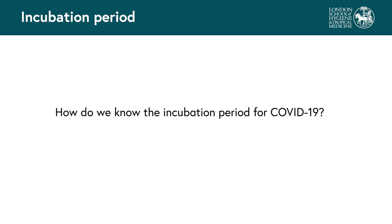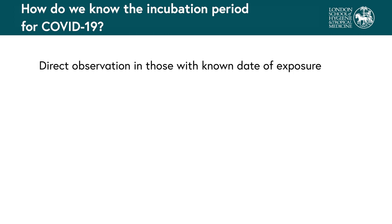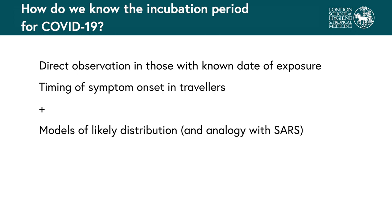Because COVID-19 is new, we didn't initially know the incubation period. It was estimated from direct observation of people with COVID-19 with known dates of exposure, and from travellers from Wuhan as we knew the last possible date of exposure, together with models of the likely distribution of incubation periods based on the typical shape, and comparison with what was known for SARS from 2003. This gave a median of six days, with a range of two to fourteen days.